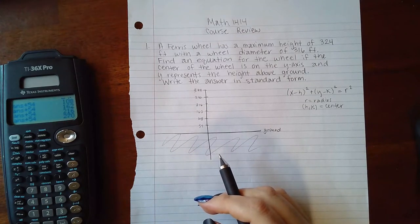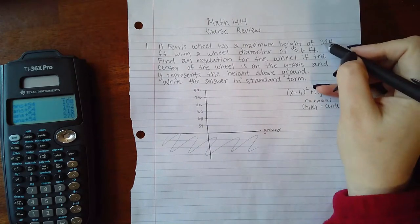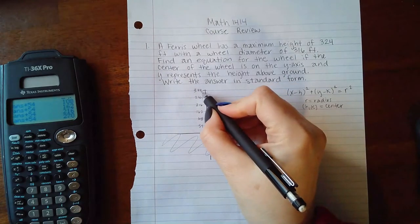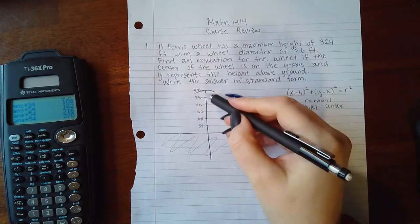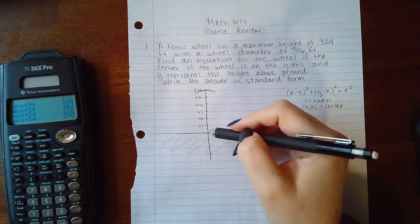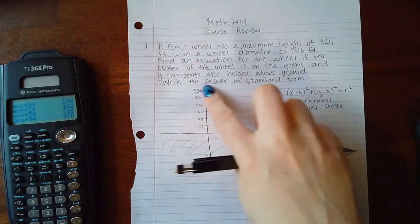But I will need to use some more information here. So I know that the height of it is at 324, so I know that the tip of the circle is going to be here. I just don't know how big I'm gonna make it or how far off the ground it starts, because you know, on a Ferris wheel, it can't spin if it's directly on the ground, right?